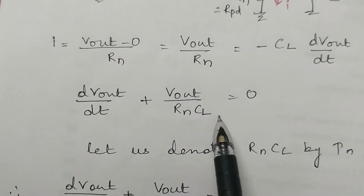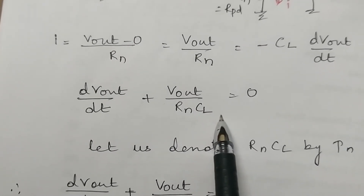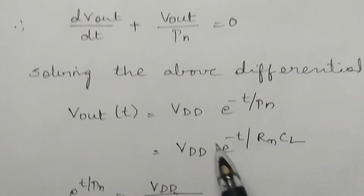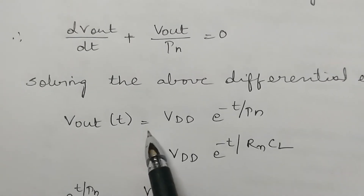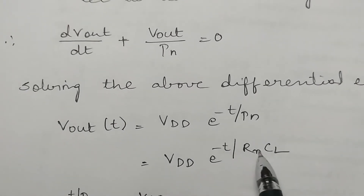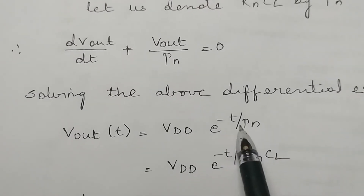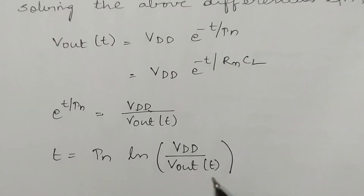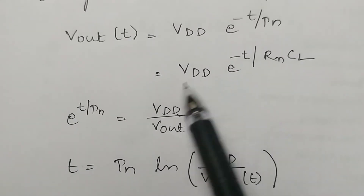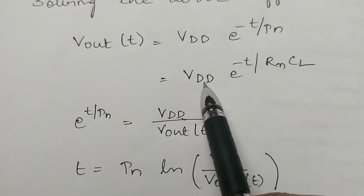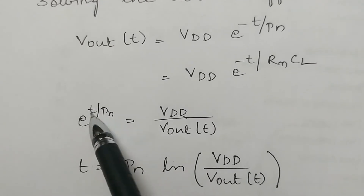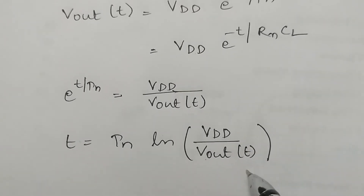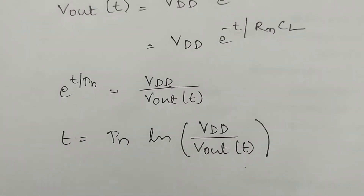This differential equation has the solution: Vout = VDD · e^(−t/(Rn·CL)), where Rn·CL = τn. To find t: VDD/Vout = e^(t/τn), so t = τn · ln(VDD/Vout).